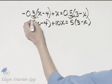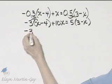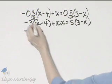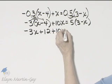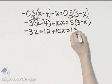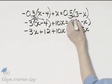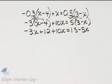Now let's continue. That's negative 3x plus 12 plus 10x is equal to 15 minus 5x. Again, using the distributive property.